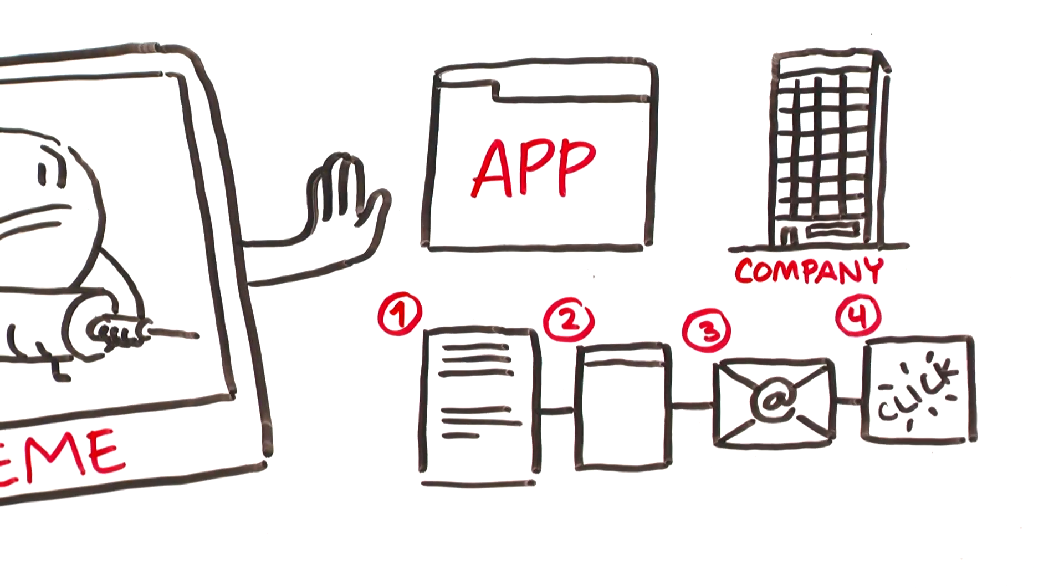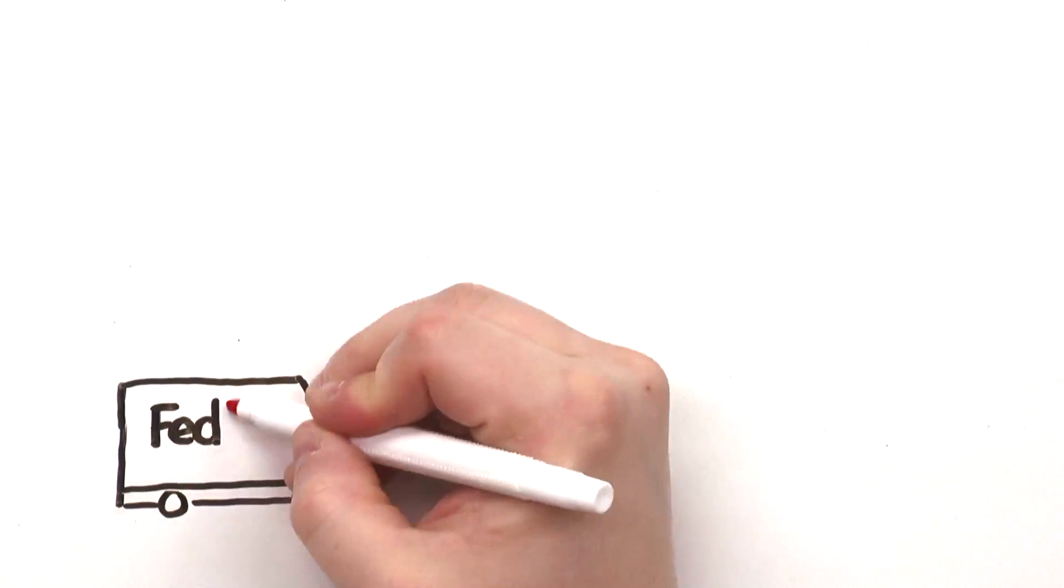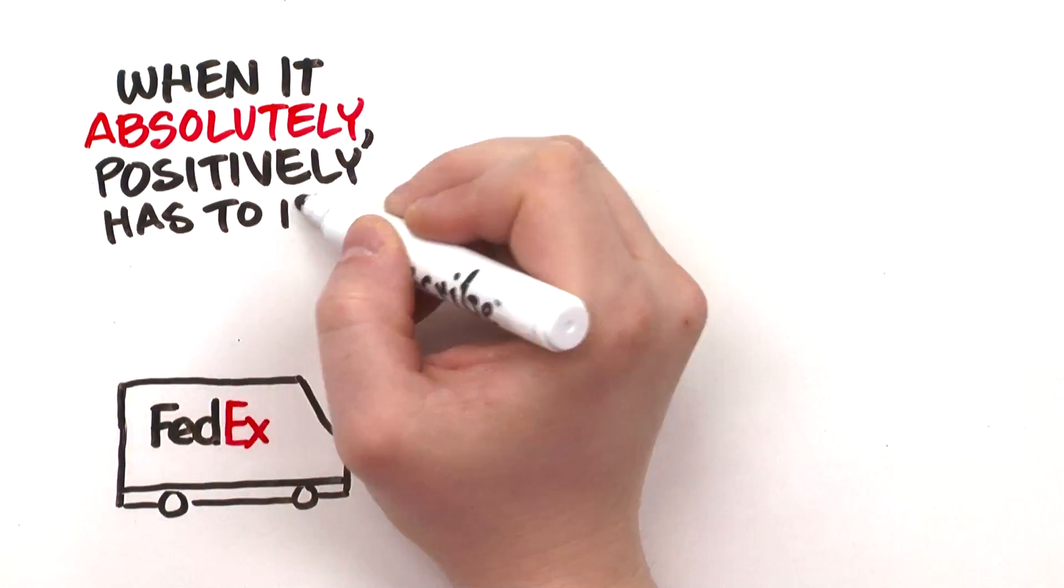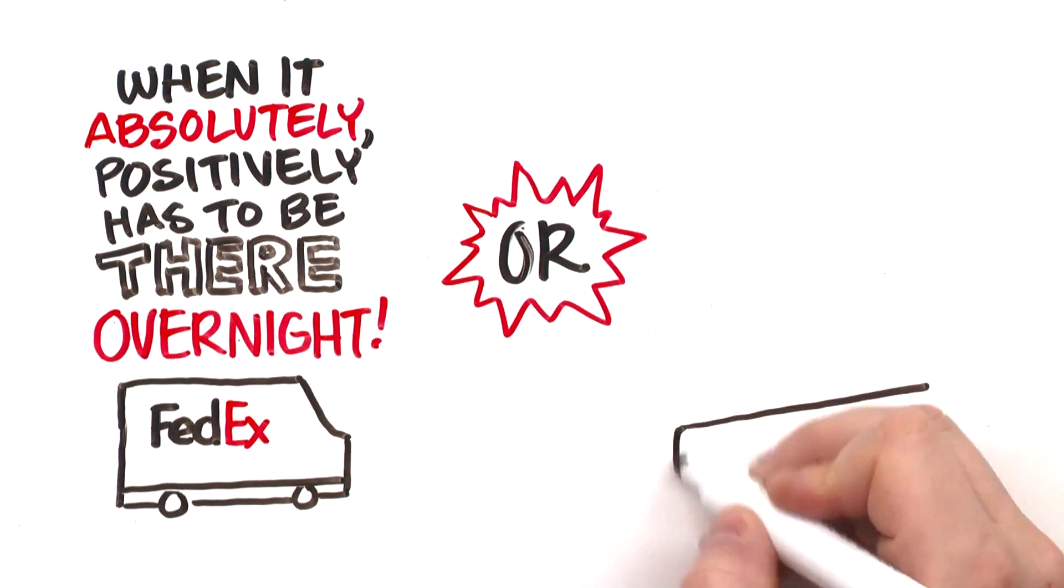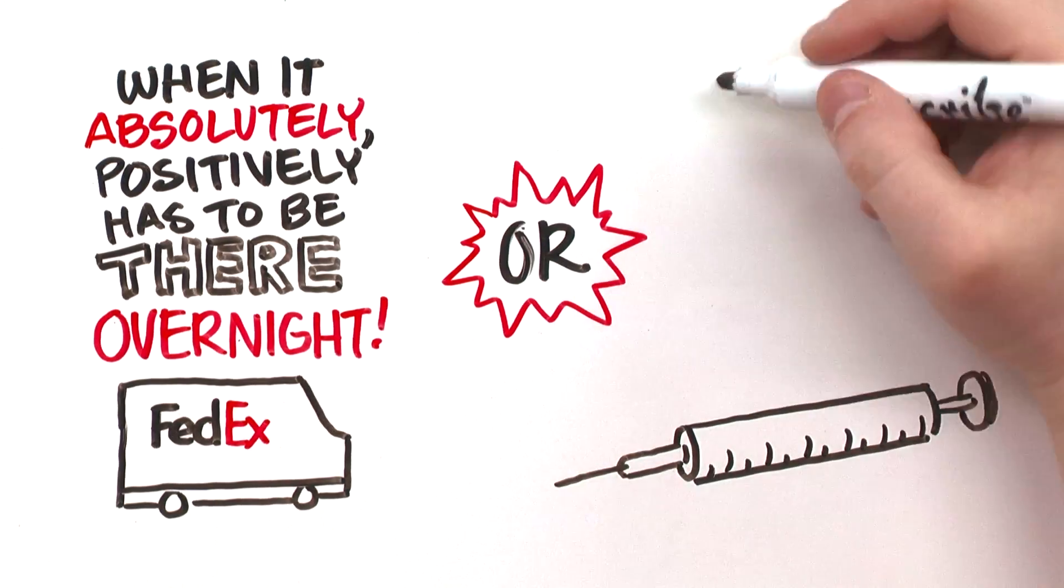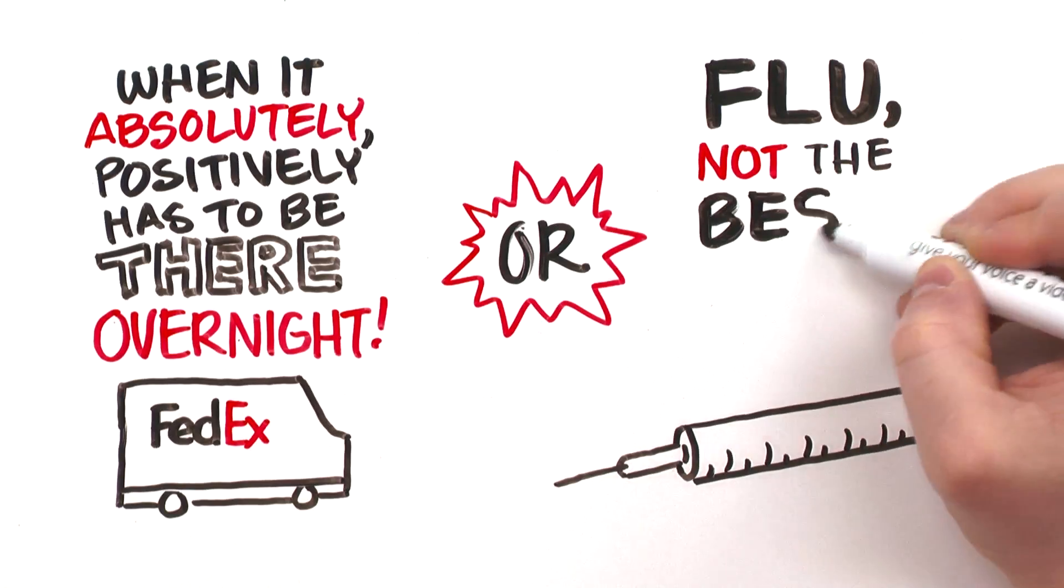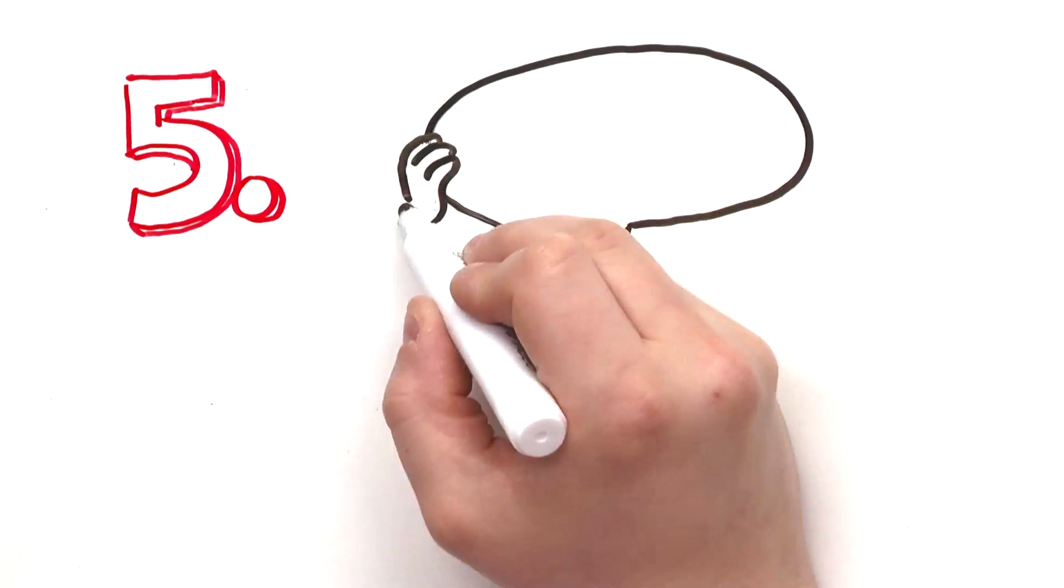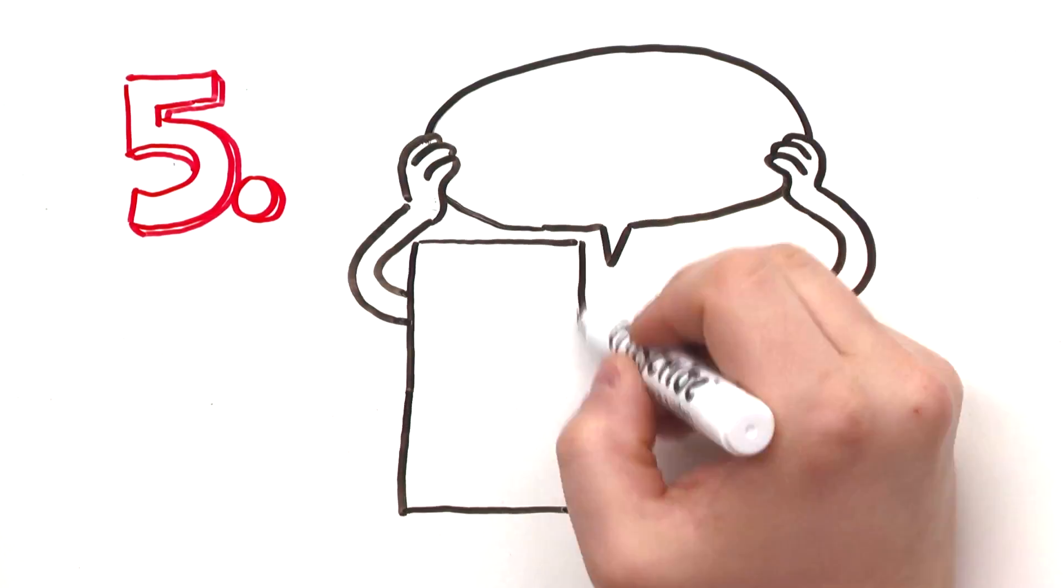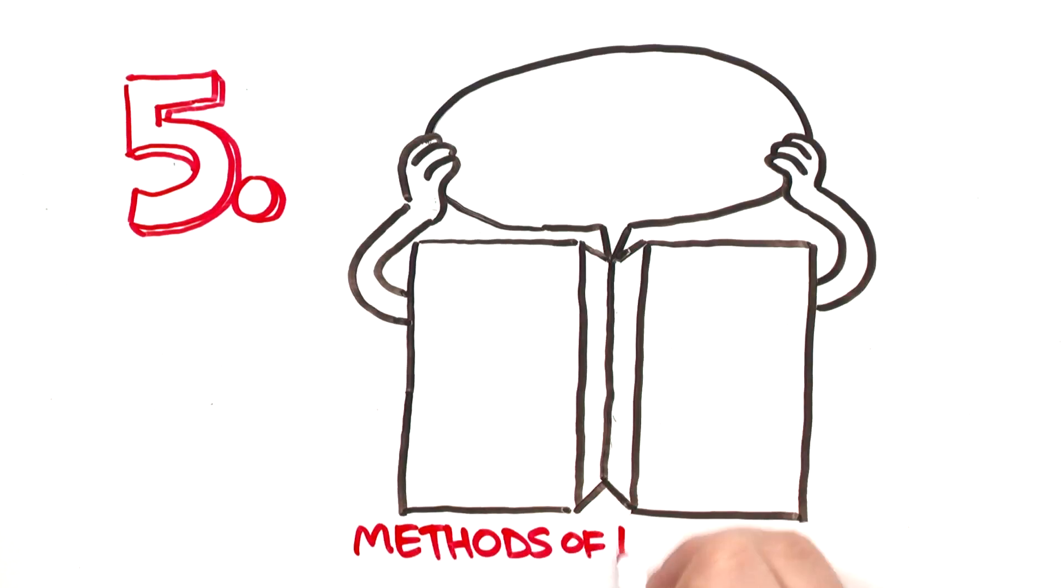Like the FedEx message: "When it absolutely, positively has to be there overnight." Or for a vaccination, maybe "Flu: not the best holiday gift." Step five is about taking that message and selecting specific methods of influence that will support it.